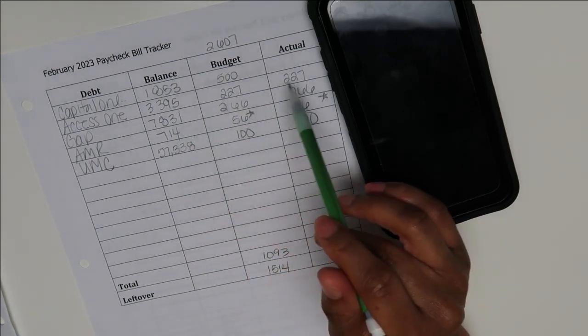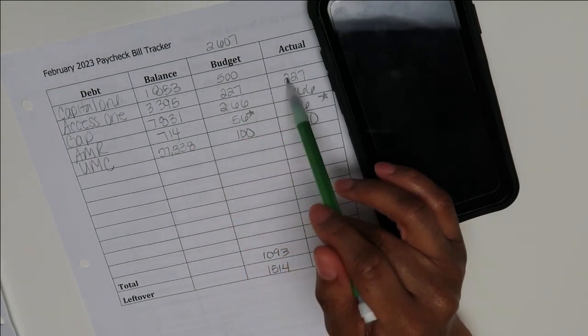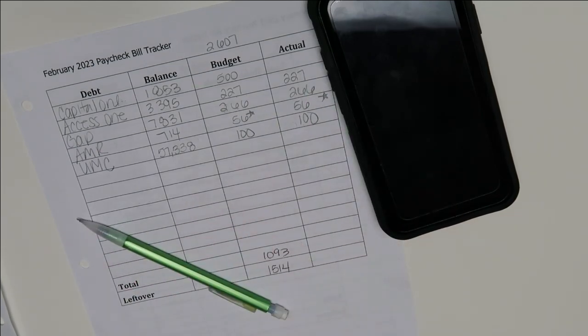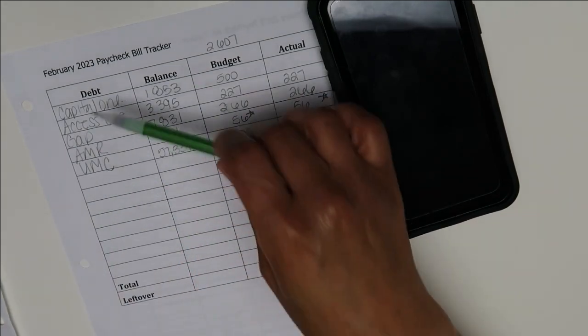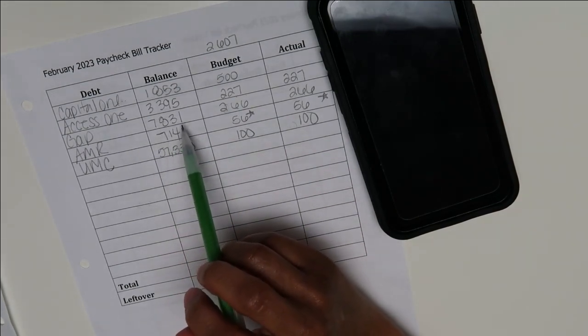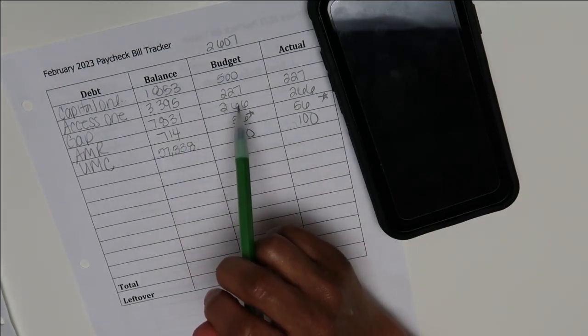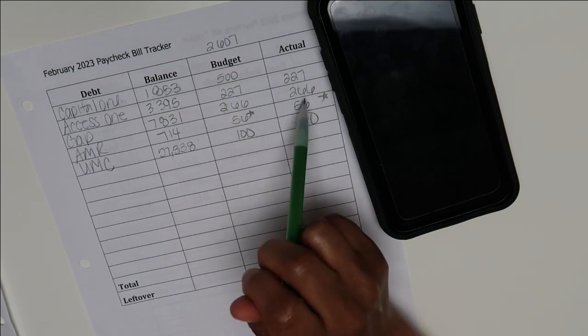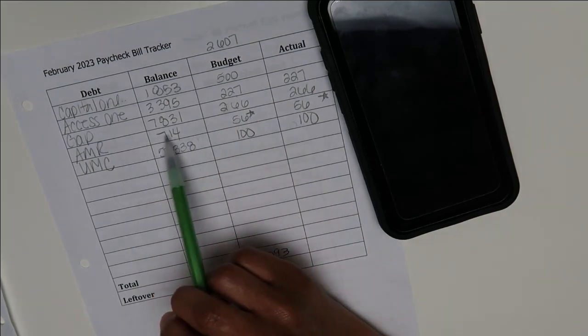But anyways, XS1, $33.95 was the balance. I paid $227 or budgeted $227 and actually paid $227. I won't talk about all of my debt in my debt-free Friday, but Gap, $7,831, paid $200 or budgeted $266, paid $266.